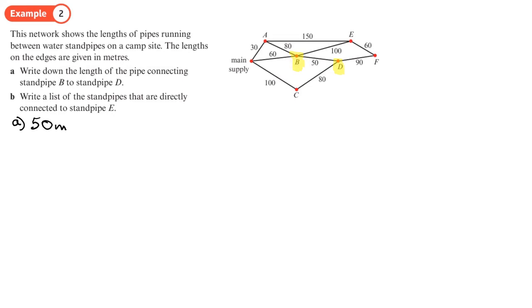And then part B, write a list of the standpipes that are directly connected to standpipe E. So standpipe E is here, and the ones that are connected directly to it are going to be A, B, and F.